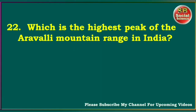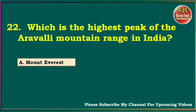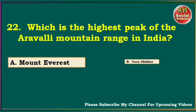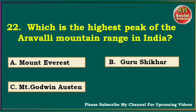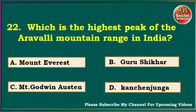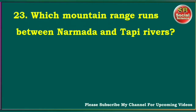Which is the highest peak of the Aravali mountain range in India? Mount Everest, Guru Shikhar, Mount Godwin-Austin, Kanchanjunga. The answer is Guru Shikhar. Which mountain range runs between the Narmada and Tapti rivers? The Karakoram, the Aravali Range, the Vindhya Range, the Satpura Range. The answer is the Satpura Range.